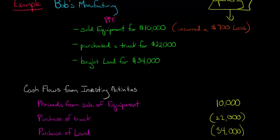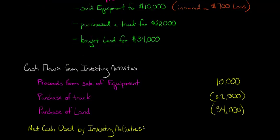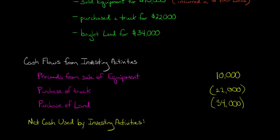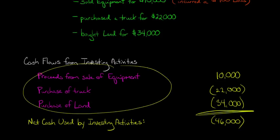Now, when we do cash flows from investing activities, we want the net cash flow from investing activities. The net is going to be $46,000 in parentheses to emphasize this is negative. We're saying it's the net cash used by investing activities. When we look at all our investing activities for the period, we used more cash than we generated.